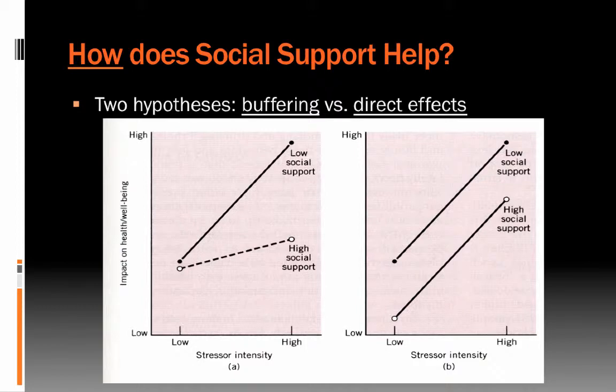There are two different hypotheses about what social support really does to help people cope with stress. One is called the buffering hypothesis. It presumes that under periods of low stress, social support doesn't really matter much — it's kind of irrelevant in terms of its impact on our well-being. But the buffering hypothesis says that at periods of high stress, when we're facing major stressors, that's when social support really makes a difference and helps buffer that stressor from impacting our well-being. People without social support suffer more in coping with stress than people who have high social support, because the social support acts as a buffer.